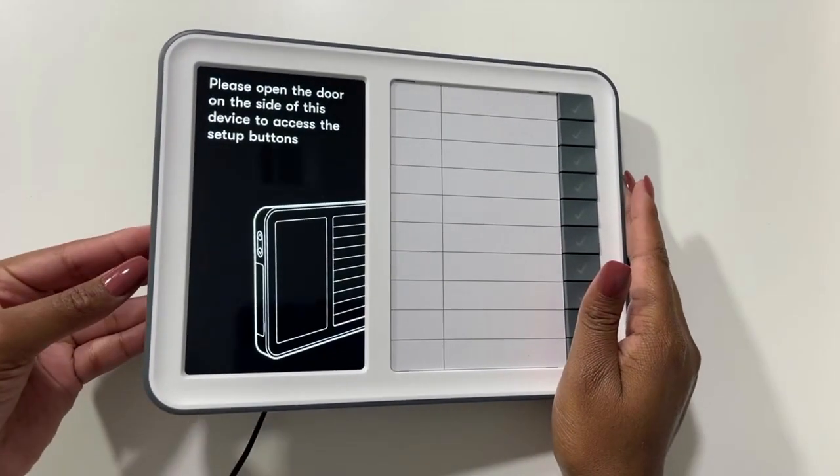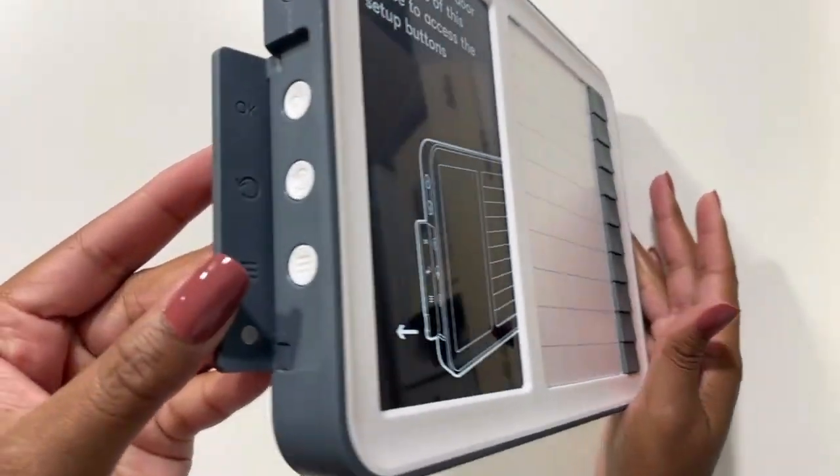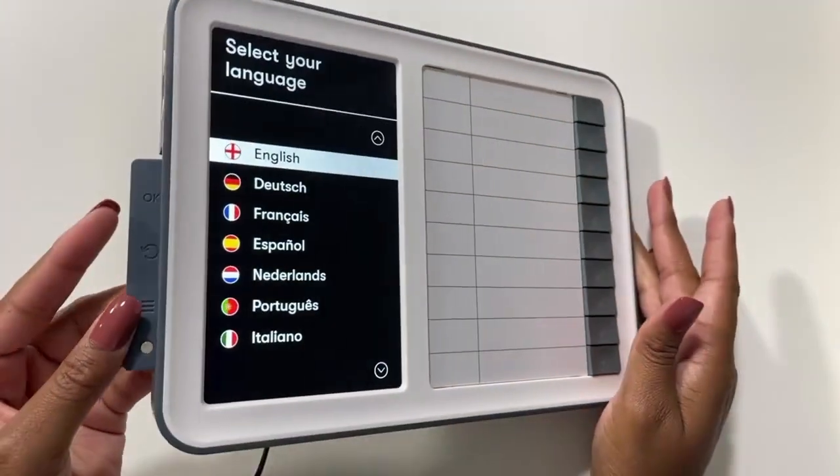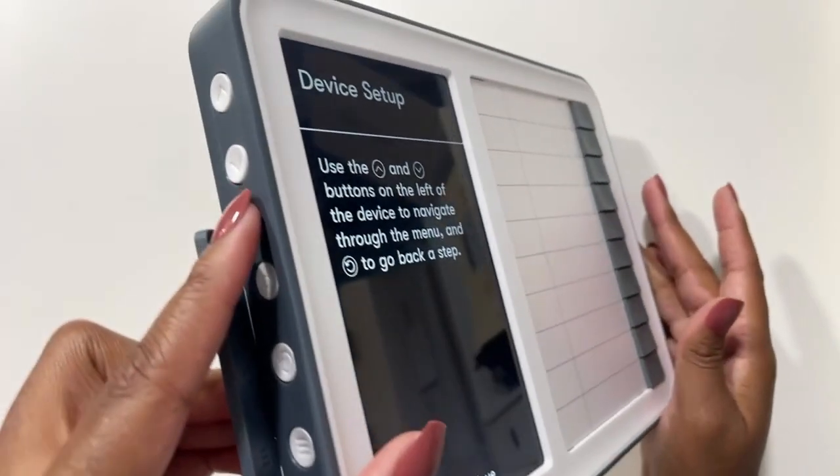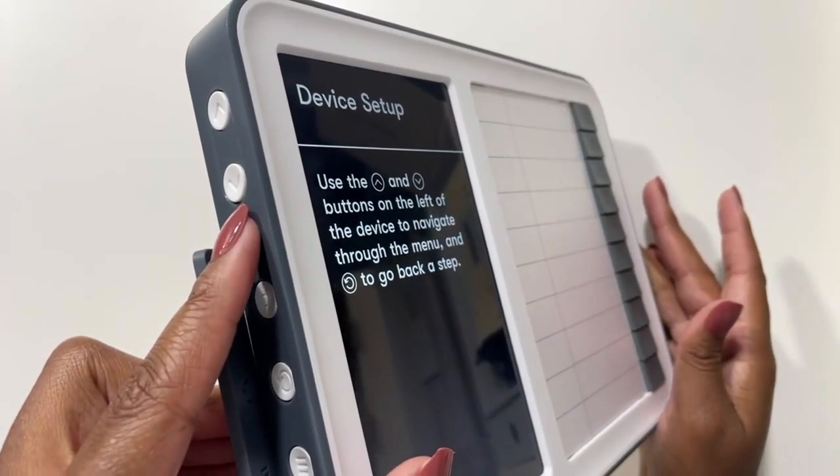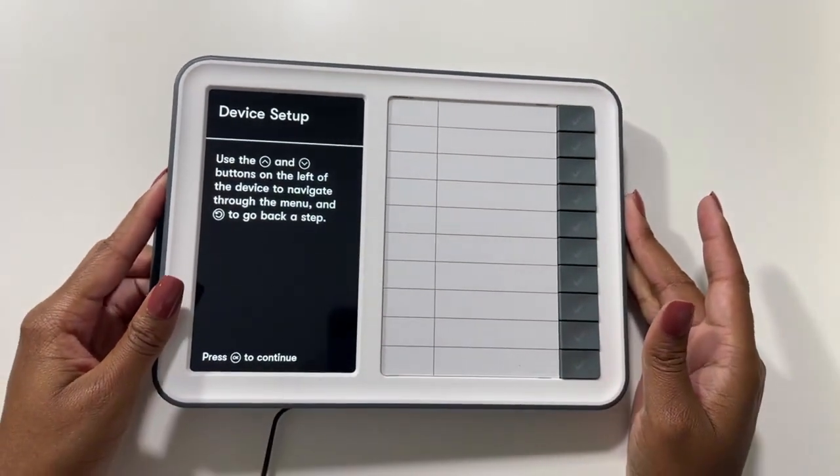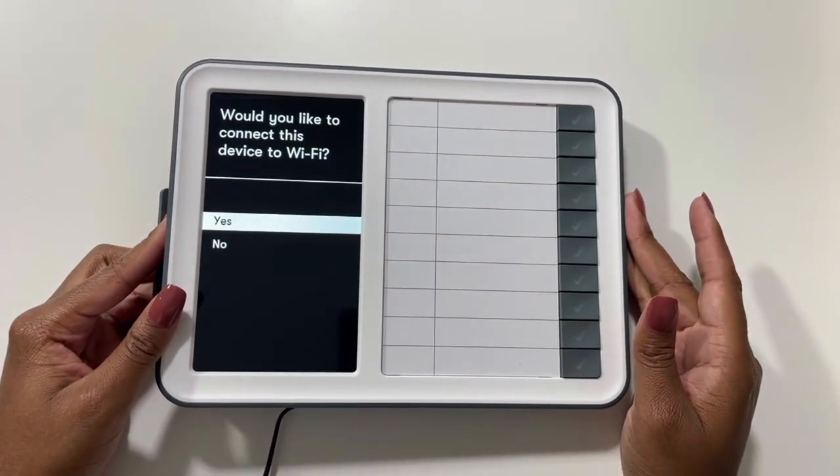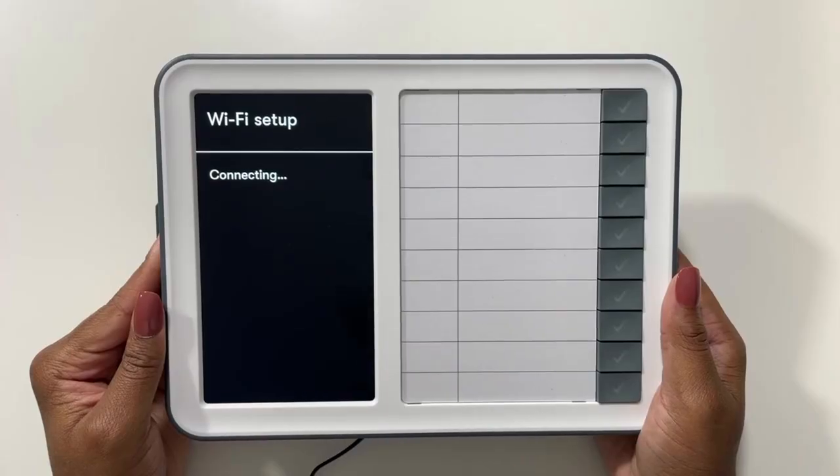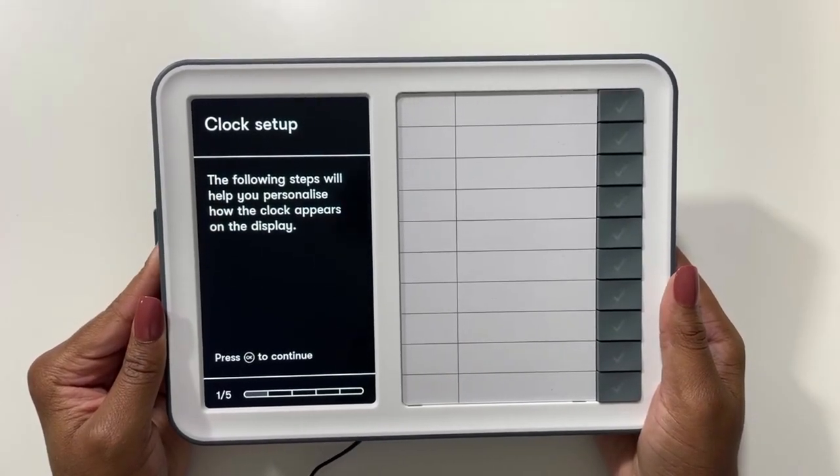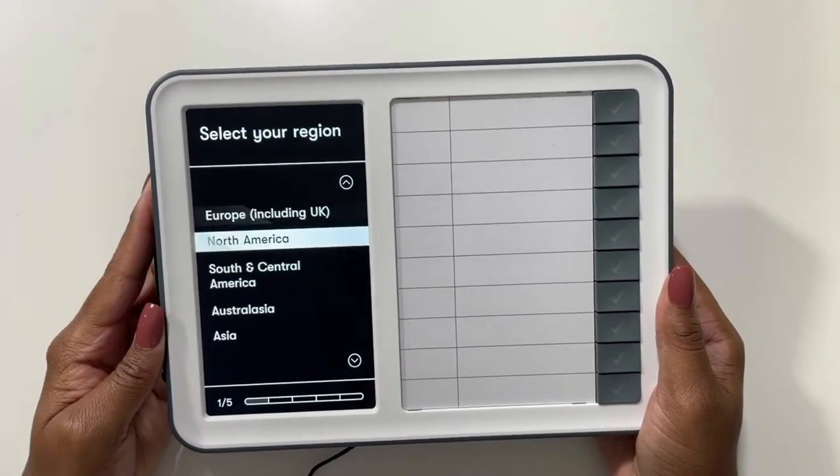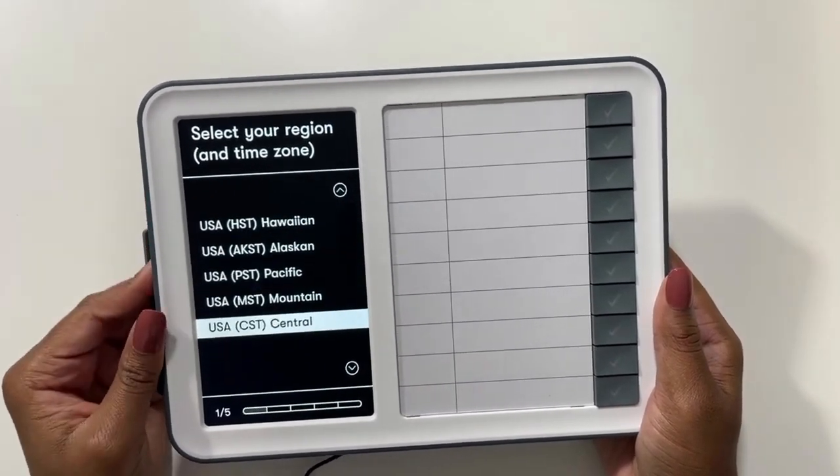On the left side of the device, we'll find a flap that we need to pull out to reveal three buttons. Now we'll select our language. You'll find the arrow buttons at the top left of the device. Next we'll connect it to Wi-Fi if we have it, then follow the prompts to set up our time and how we want our display to look.